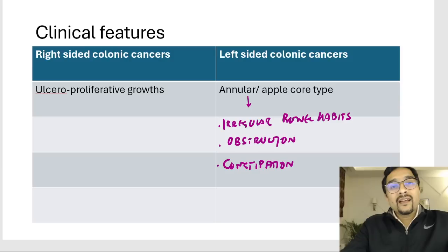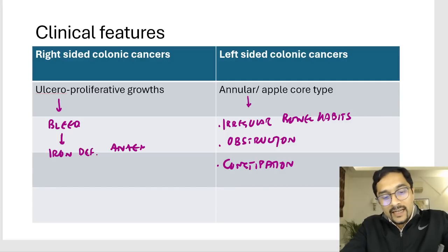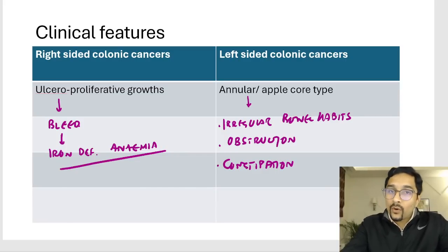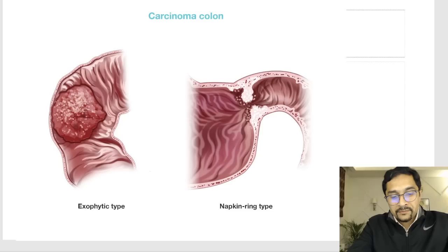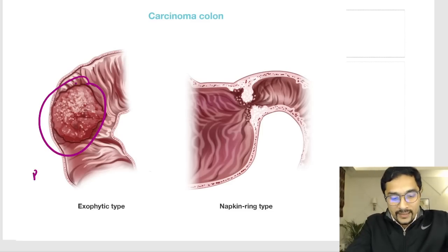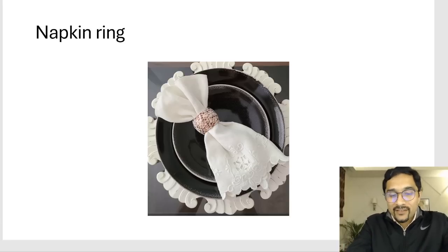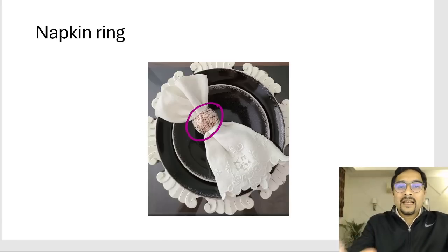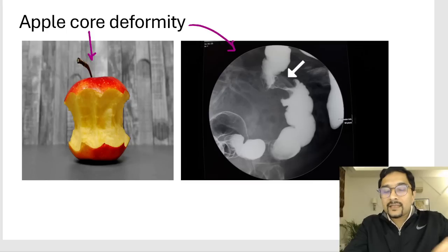Right-sided lesions are ulceroproliferative and can bleed, causing the patient to present with iron deficiency anemia. Any elderly patient presenting with iron deficiency anemia should be investigated to rule out right-sided colorectal cancer. Right-sided lesions are exophytic whereas left-sided lesions are napkin ring type — constricting lesions. On barium, left-sided lesions show the apple core deformity, which has been asked in the exam.